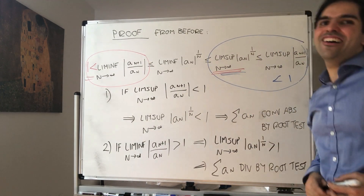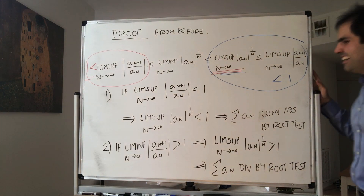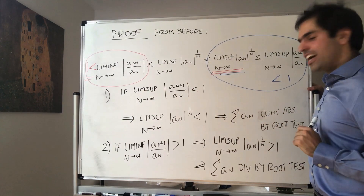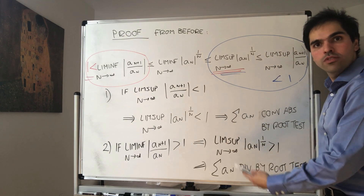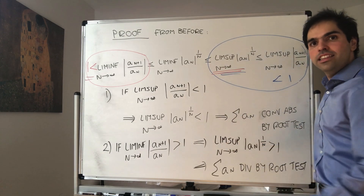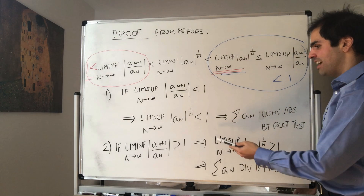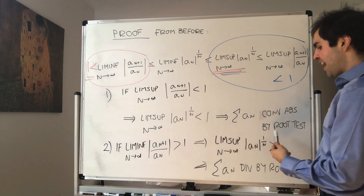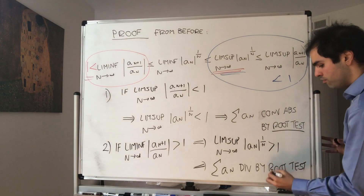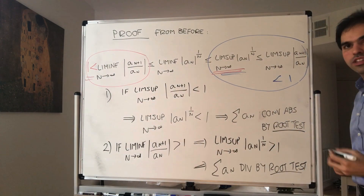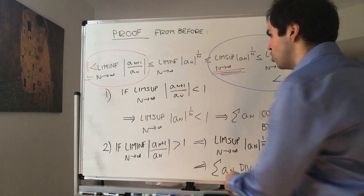That was so hard to prove — just kidding. The whole point is also something I want you to notice: this shows that the root test is way better than the ratio test, because we actually use the root test to prove the ratio test. So the root test has strictly wider scope.